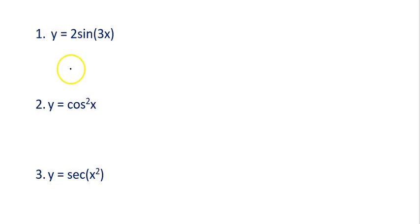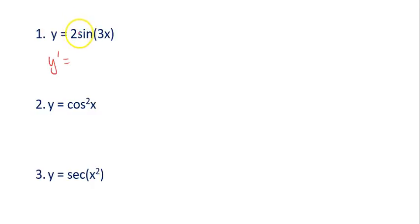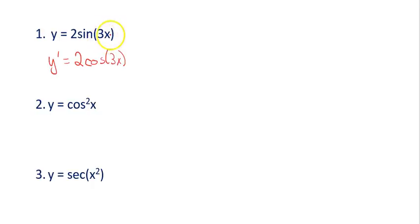Here are some examples using these trig rules. For the first example, you bring down that 2 in front because it doesn't have an x with it, so it's not a product rule — just like when we had a number in front with exponential rules. Then apply the trig rule: the derivative of sine is cosine, so change sine to cosine and keep what's in the parentheses the same. Since the inside is not a plain x, multiply by its derivative at the end.